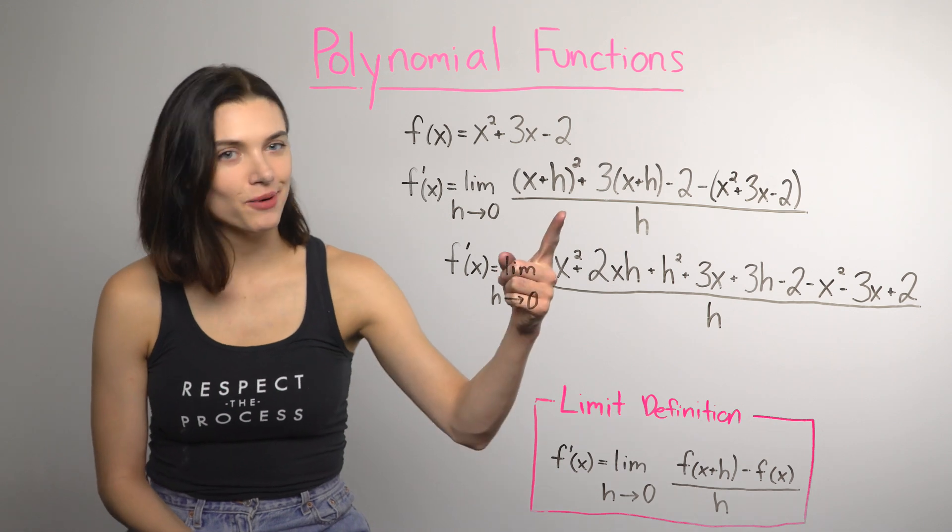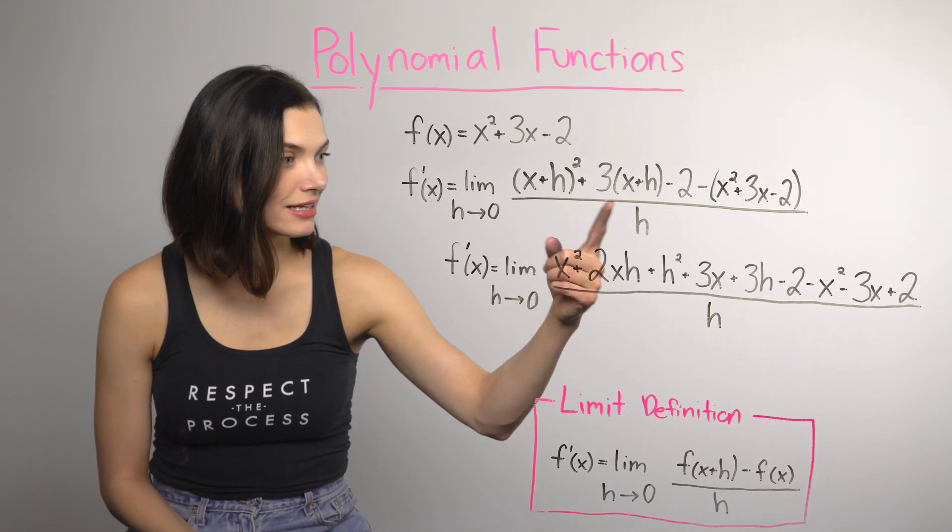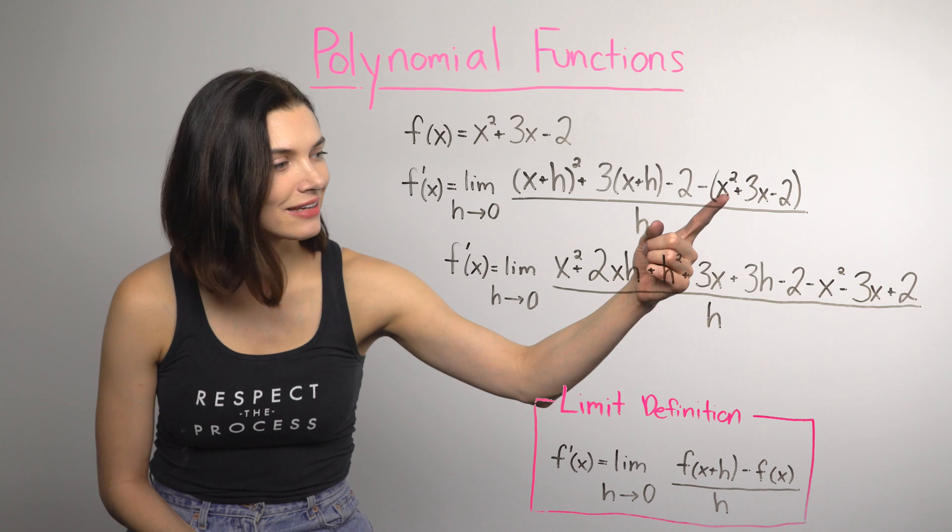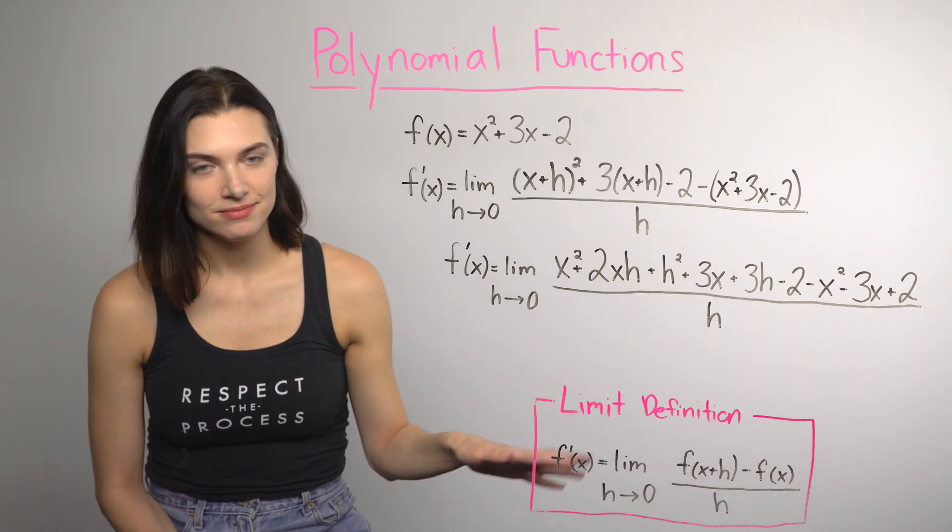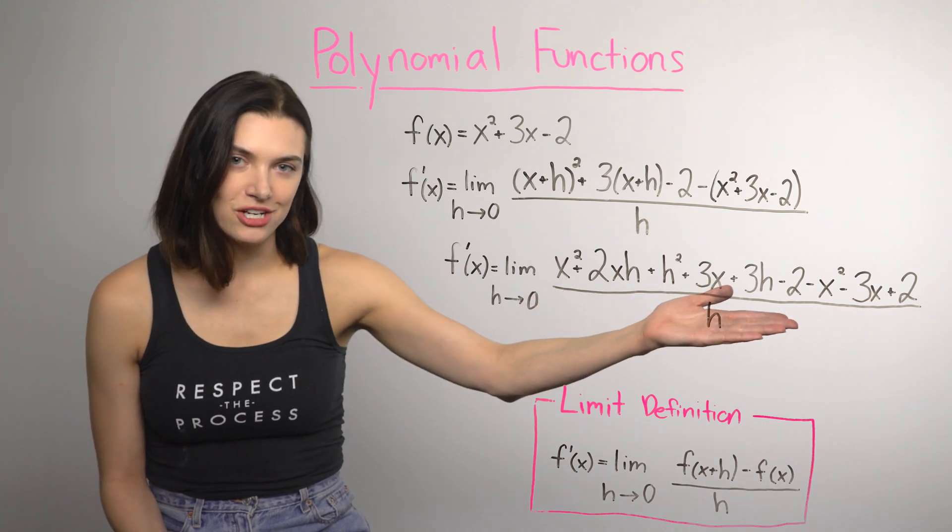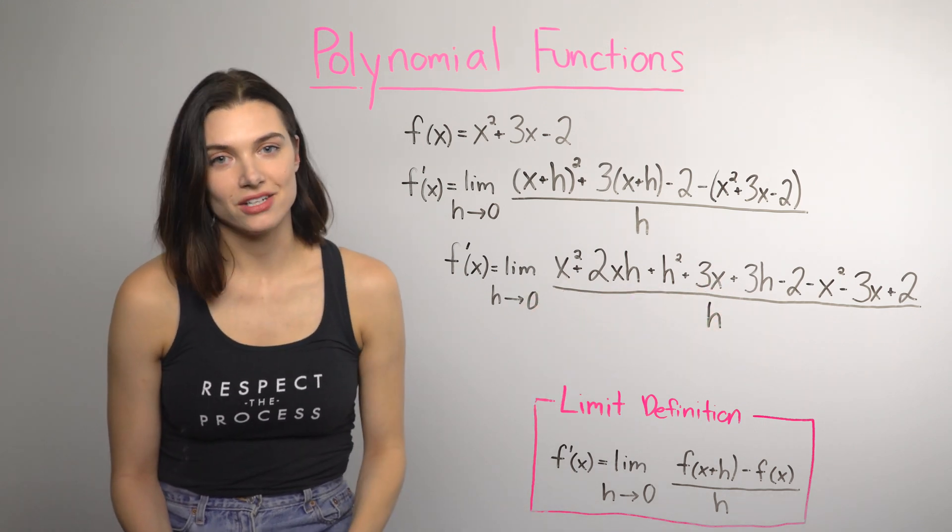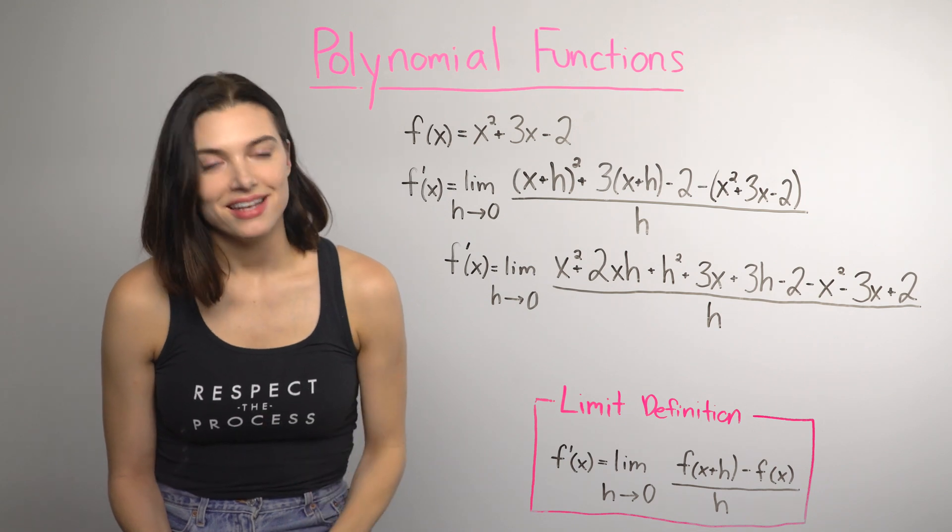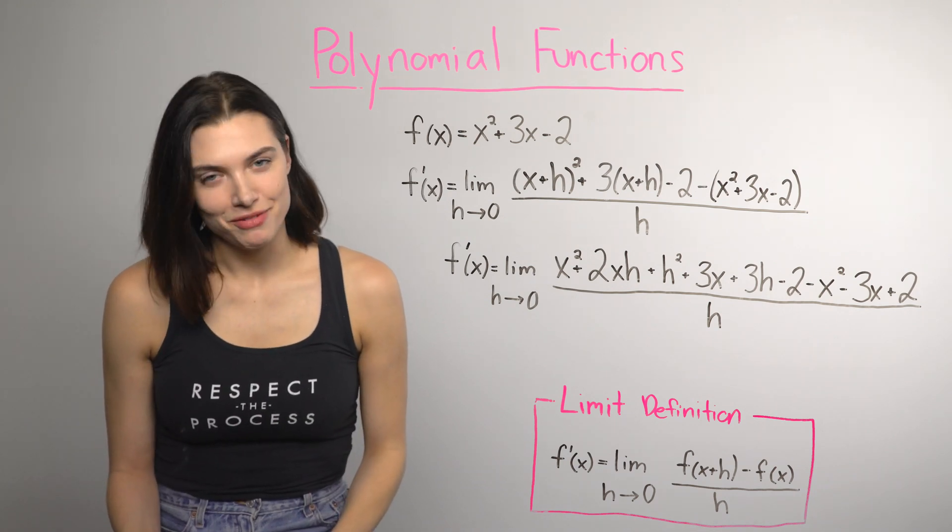As you can see, I have foiled, distributed the three, and distributed the negative to everything that's in the parentheses on the end. Okay. So, looking at this, there's a lot I can start canceling out. And that's good because I'd be unhappy if there wasn't. And happy Janelle is better for everybody.